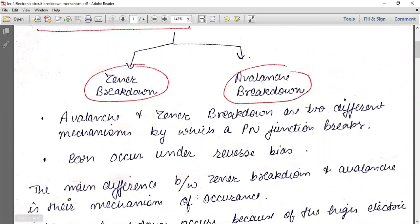The main difference between zener breakdown and avalanche is their mechanism of occurrence - that is, how they occur and what is the procedure behind their occurrence.